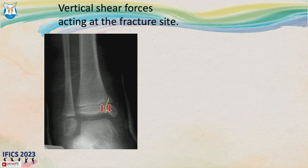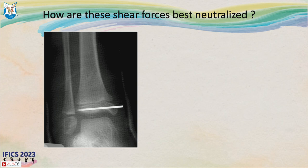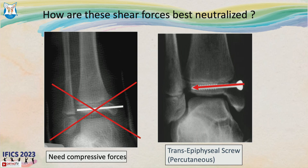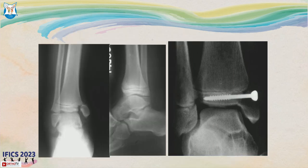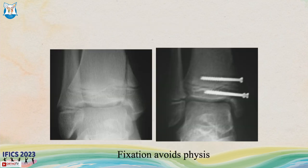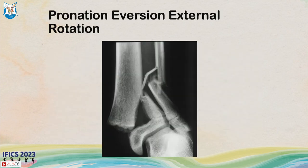Vertical shear forces acting on this fracture cause displacement. Shear forces are best neutralized by an intra-epiphyseal screw rather than a trans-epiphyseal one. That is the best way to fix this fracture. For a Salter-Harris type 4 — again a vertical fracture with shear forces — put two screws on either side of the physis parallel to the physis to neutralize the shear forces.